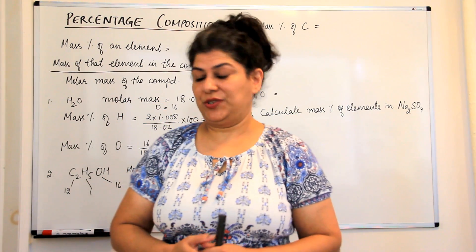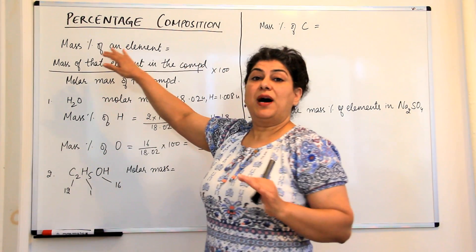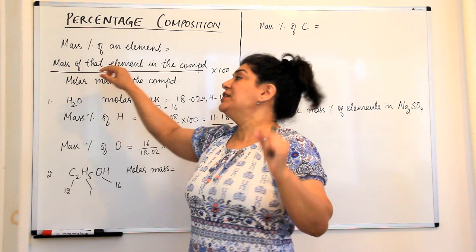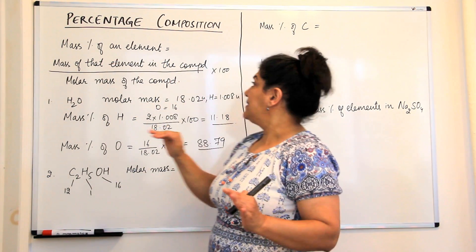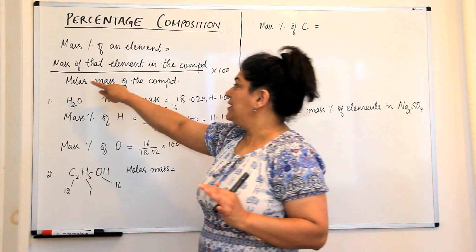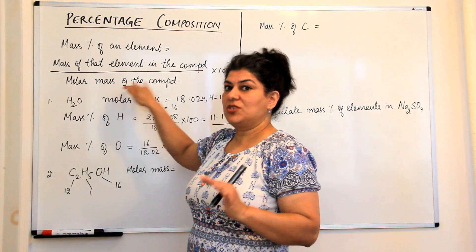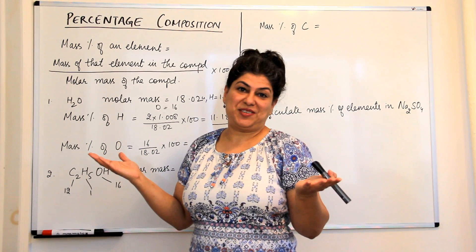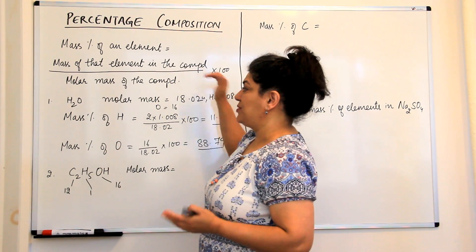The mass percent of any element in a compound is the mass of that element in the compound divided by the molar mass of the compound, multiplied by 100. That gives you the mass percentage.